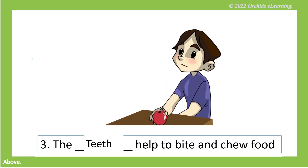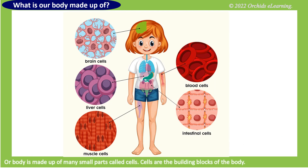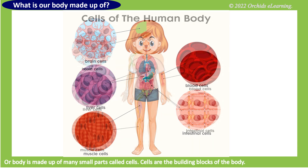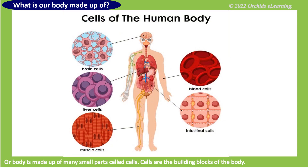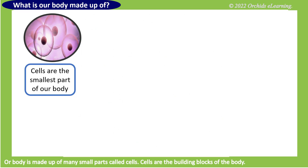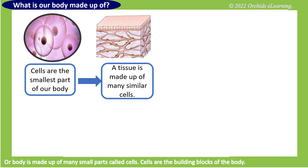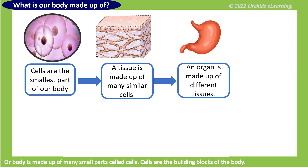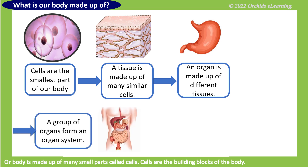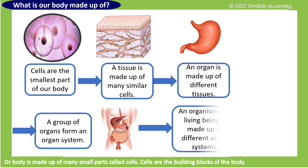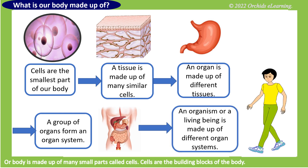Let us learn more about our body. Our body is made up of many small parts called cells. Cells are the building blocks of the body and the smallest part of our body. A tissue is made up of many similar cells. An organ is made up of different tissues. A group of organs forms an organ system. A living being is made up of different organ systems.